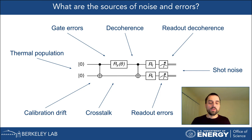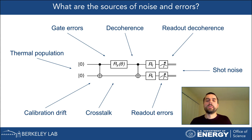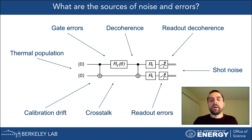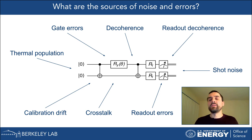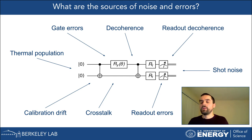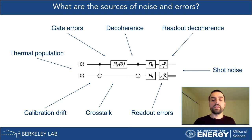Another source is decoherence, where the quantum state becomes unstable over time. There is also crosstalk, which happens when applying a gate to a qubit unintentionally affects other qubits. At the end of a circuit, readout errors occur — and readout is a fairly slow operation, so significant decoherence happens during readout. There is also shot noise — statistical uncertainty present even on an ideal quantum computer.